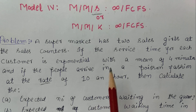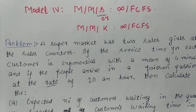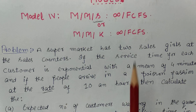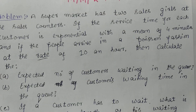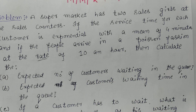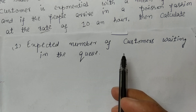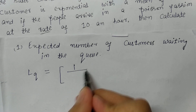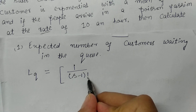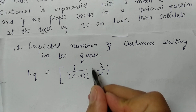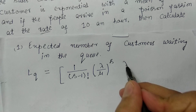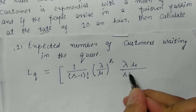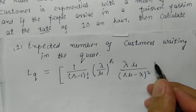From the problem, s equals 2, λ equals 1/6 per minute, and μ equals 1/4 per minute. These conditions satisfy the assumptions of this model, confirming it represents M/M/S/∞/FCFS. The first part asks us to find the expected number of customers waiting in the queue, Lq equals (1/(s−1)!) × (λ/μ)^s × (λμ/(sμ−λ)²) × P0.